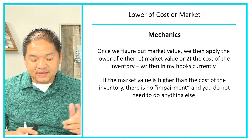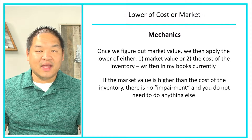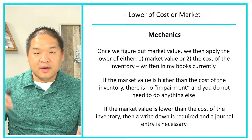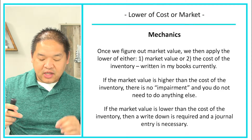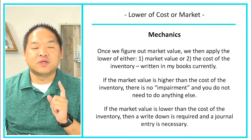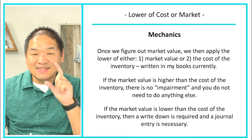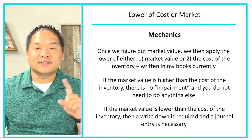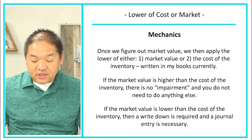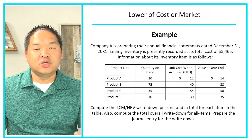If the market is higher than the cost, there is no impairment and you do not need to do anything. However, if the market value is lower than the cost, a write-down is necessary, and a journal entry is required to reduce the inventory in our books by the amount of the difference between the cost and market valuation. Let's go through an example.